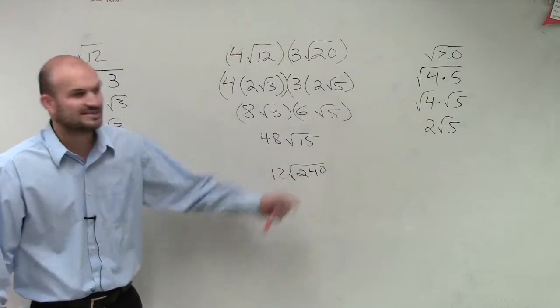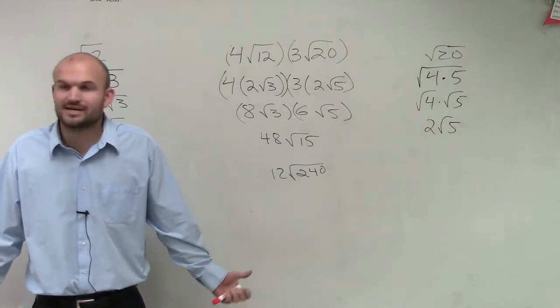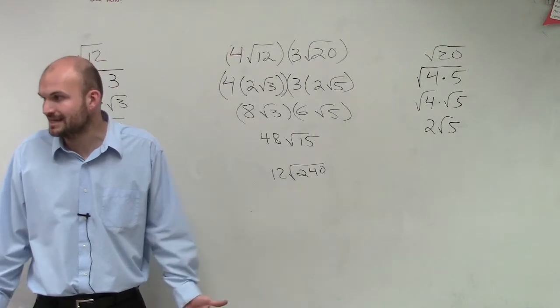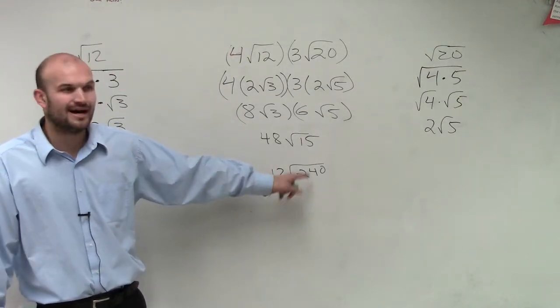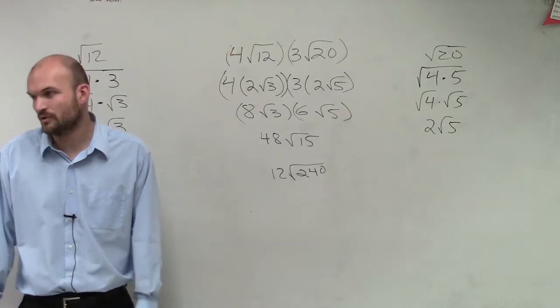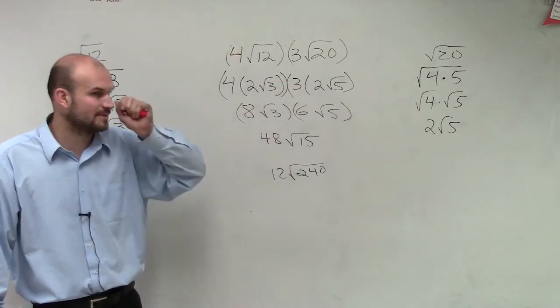Then, but then, you've got to go and simplify 240. And sometimes, with doing square numbers, that can be more work than is needed. So, you could just multiply across and then try to simplify this. But I don't want to try to simplify the square root of 240. You can do it, but I would much rather just simplify them first and then multiply.